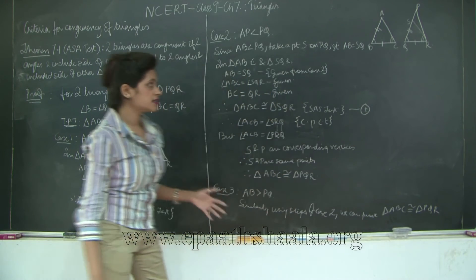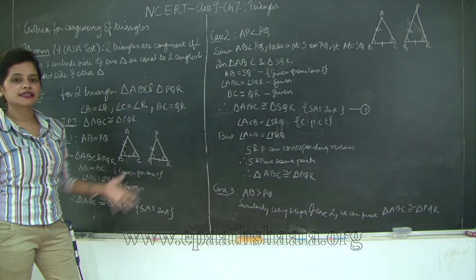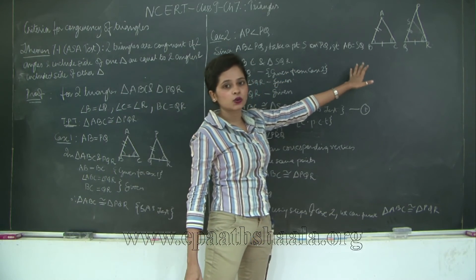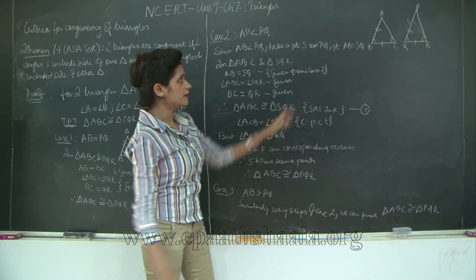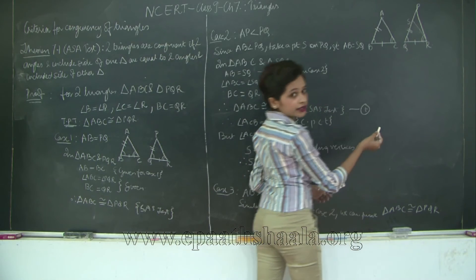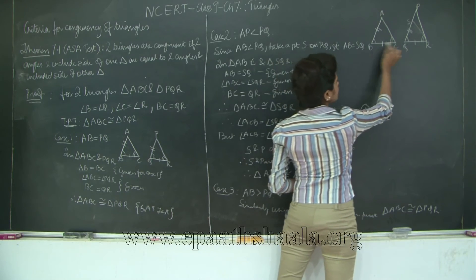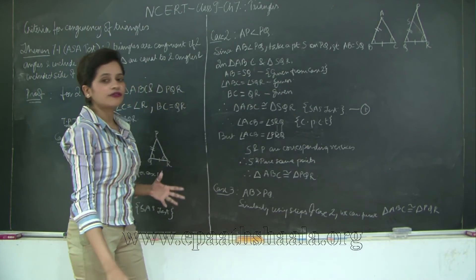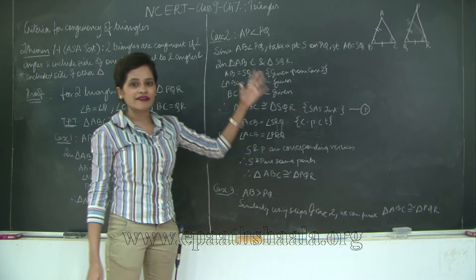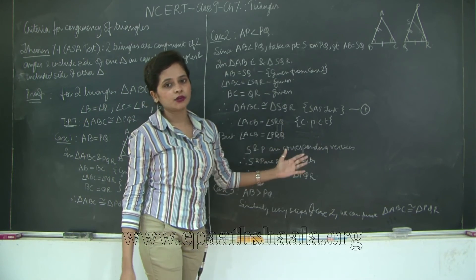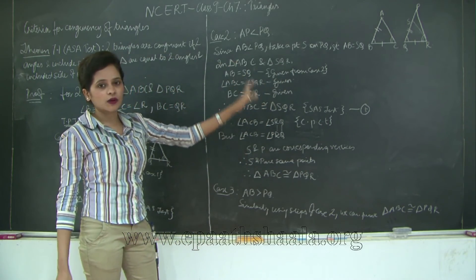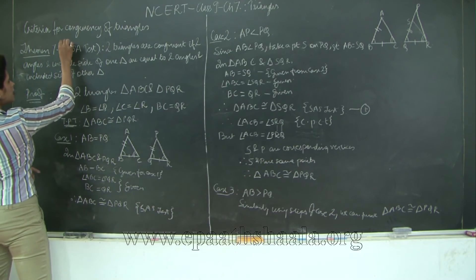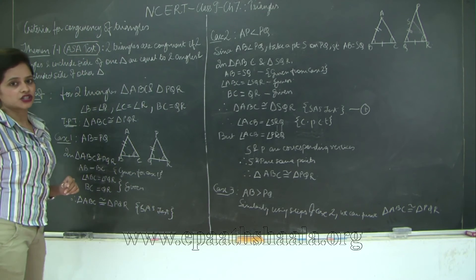In all three cases we have proved that triangles ABC and PQR are congruent when any two angles are equal and the included side between the two angles is equal — that is, angle B equals angle Q, angle C equals angle R, and BC equals QR. Therefore the two triangles are congruent by the Angle Side Angle property — ASA — which is the new criterion for congruency of triangles.